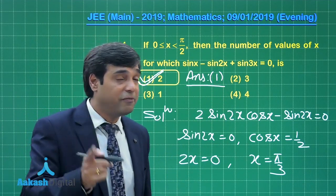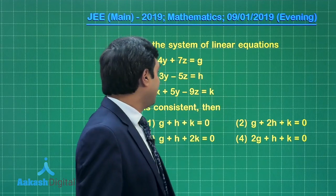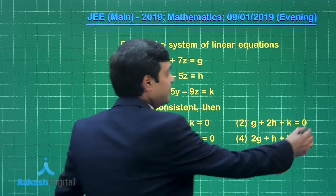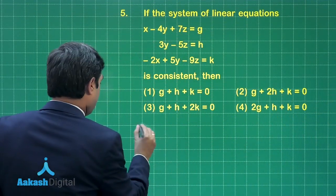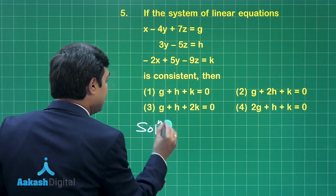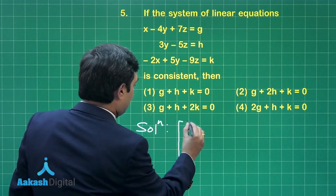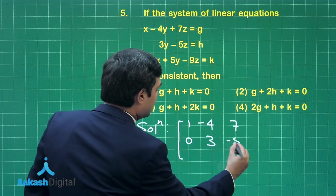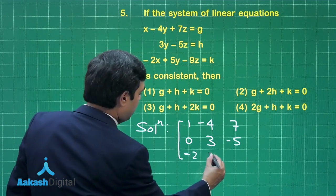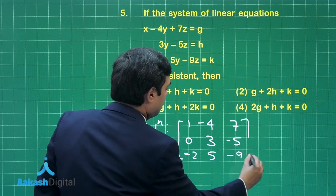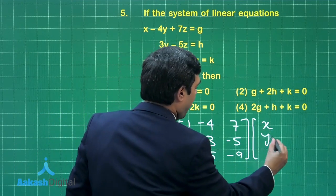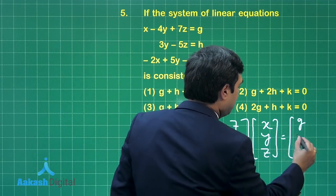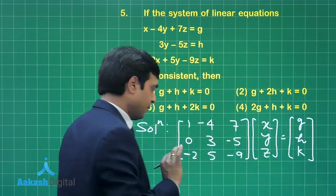Let us move on to question number 5. If the system of linear equations is consistent, let us understand this question. Writing the equations in matrix form: the coefficient matrix is [1, -4, 7; 0, 3, -5; -2, 5, -9] and the right-hand side is [g, h, k].